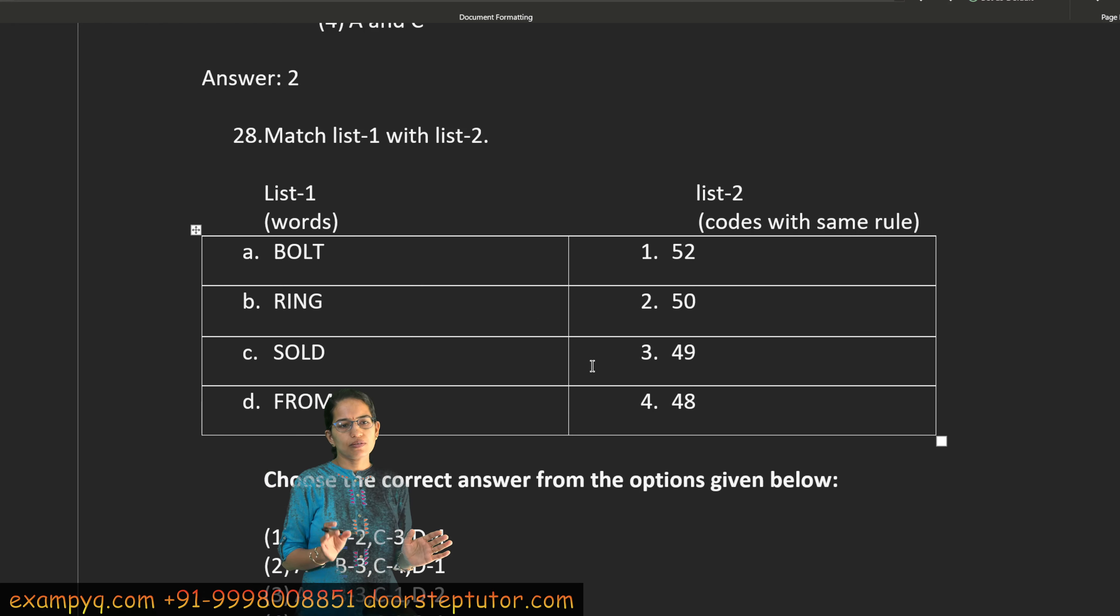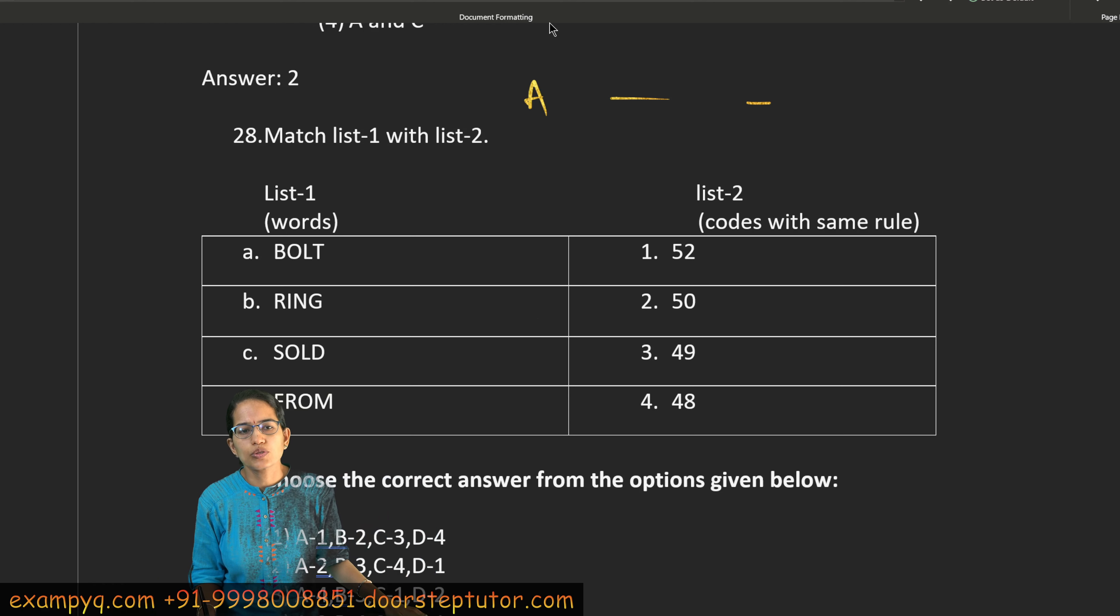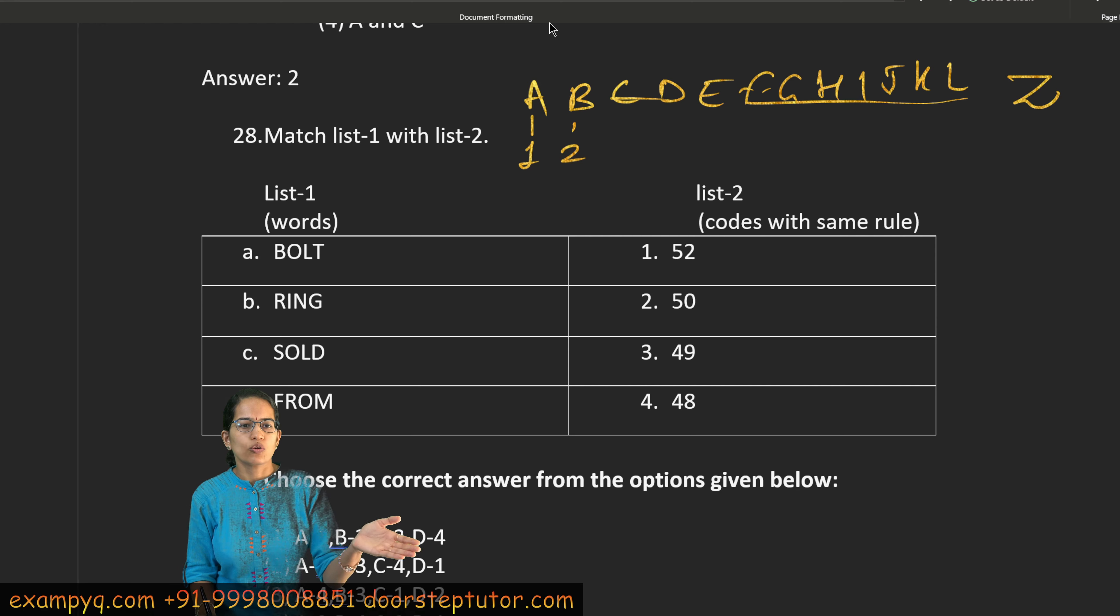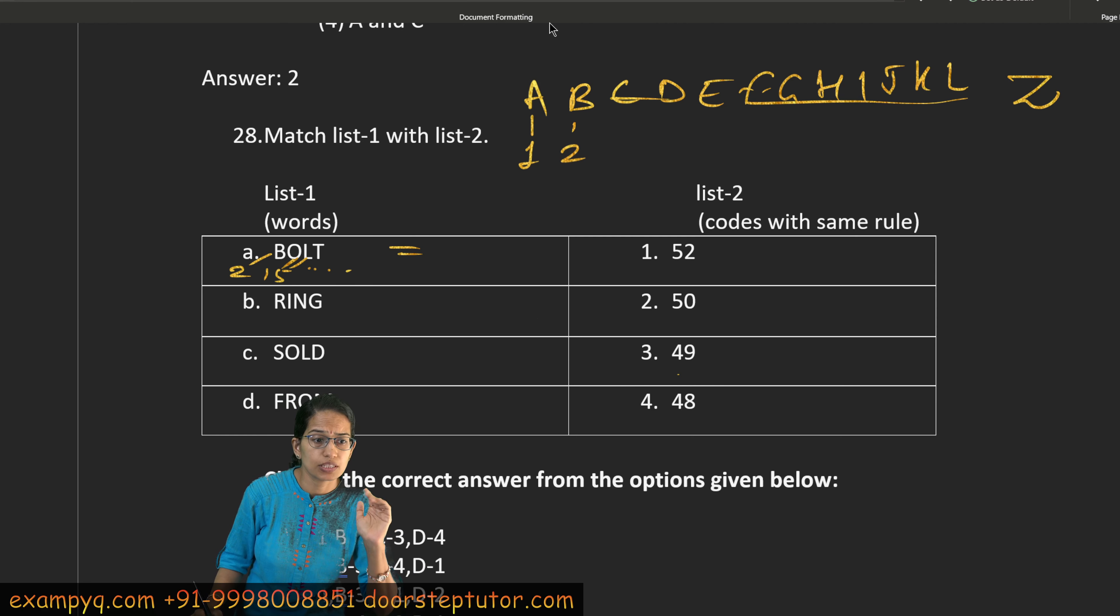Now this is a question. What do you have to do? A to Z write all the letters. A is 1, B is 2, C, D, E, F, G, H, I, J, K, L. If you have to do this, you will have to assign values. So B has become 2, O has become 15, and the rest of the letters will be added. One simple thing which you can do here, it is like BOLT and SOLD. So I have taken the value O and L. Now what do I have to do? This is B and this is T.